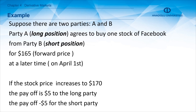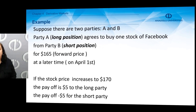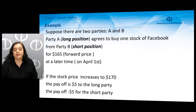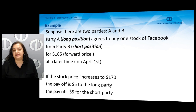For example, suppose there are two parties A and B. Party A, which has the long position, agrees to buy one share of stock — say Facebook — from party B. The buyer of the stock is said to have the long position, whereas the seller is said to have the short position. There is a forward price of 165 dollars, and the maturity of this forward contract is at a later date, say April 1st of the coming year.